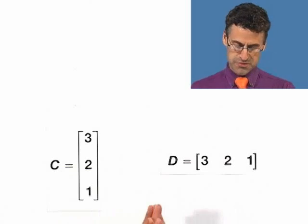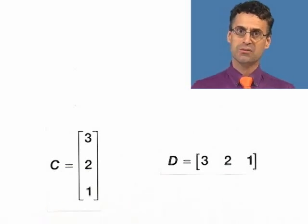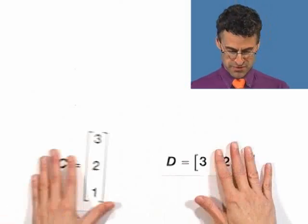So you can only have two matrices being the same if they're the same size, which means the number of rows agree and the number of columns agree. So that was a sneaky, tricky question.